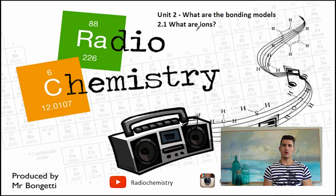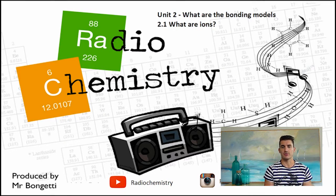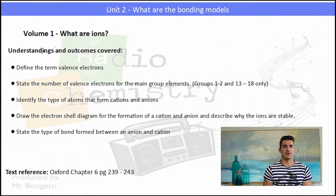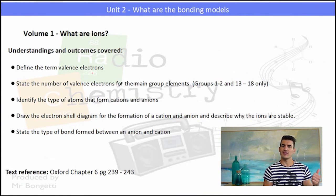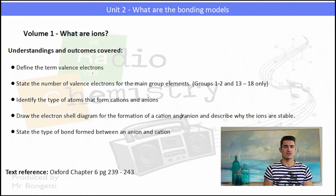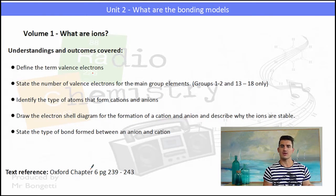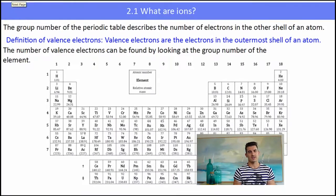Unit 2, what are the bonding models — 2.1, what are ions? We look at what are ions in this video. The understanding and outcomes: we need to define the term valence electrons, know how many valence electrons are in the elements, identify the types of cations or anions, and state the type of bond formed between anions and cations. The text reference is below.